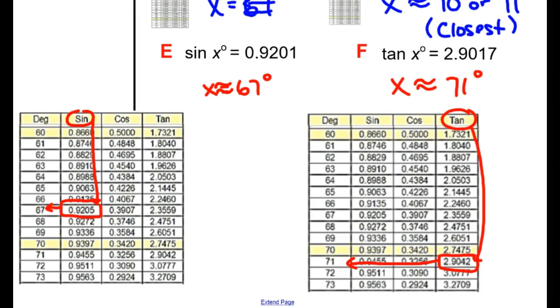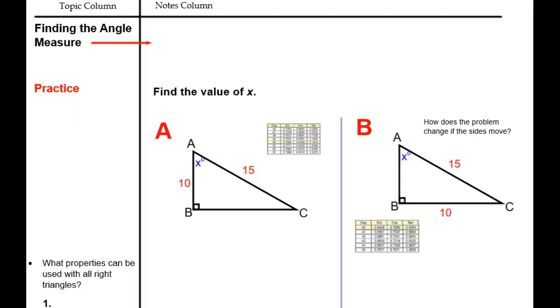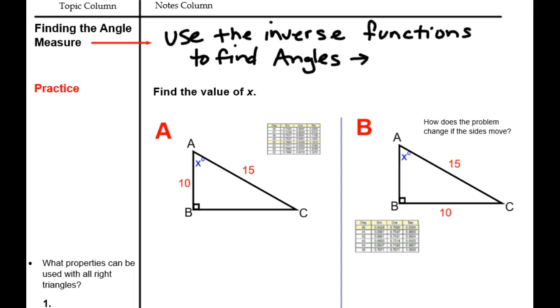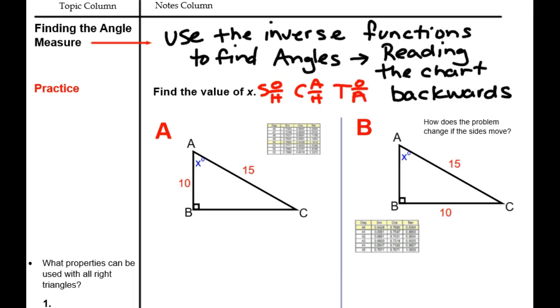All right. Flip to page two. It says we will be finding angle measures. Now, instead of sides, we'll be finding angle measures. To do that, you will use the inverse functions to find angles. What does that really mean? That means we will be reading the chart backwards. We are still going to use SOH CAH TOA for all of these problems. We just have to read the chart backwards.